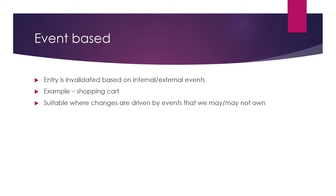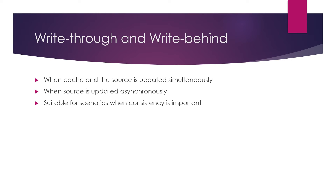Since we don't own the stock prices, how do we know if the price has changed or if the cached price is still valid? In scenarios where we don't own the data set, don't own the updates, or don't know the timing of those updates, we can use events. In this example, we listen to price events. Whenever a price changes for a security, we receive an event and based on that event we can update or invalidate those prices in the cache.